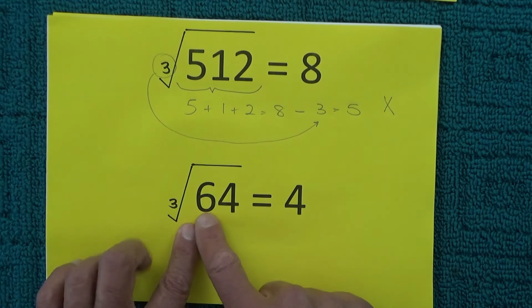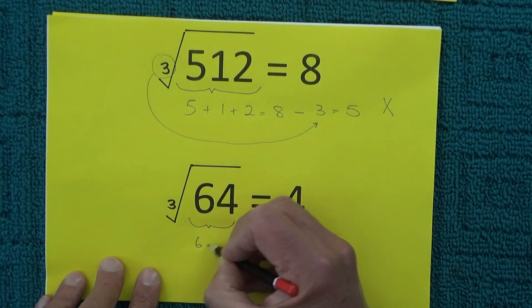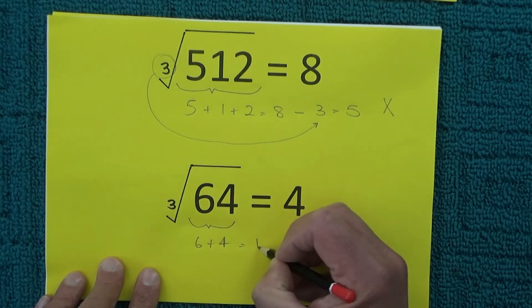And the same for the cube root of 64 which is equal to 4. There you add the 6 plus the 4 equals 10, take away the 3 and you're left with 7 which isn't correct.